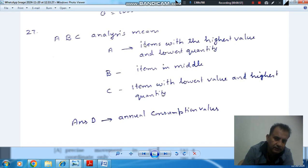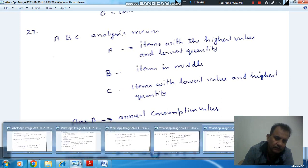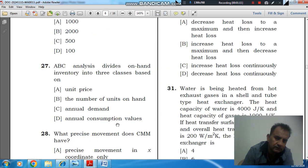So all these ABC categories indicate the values and consumption of items. The answer is option D: annual consumption value.